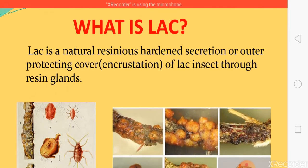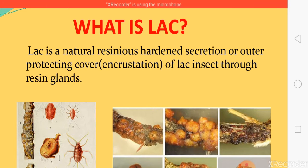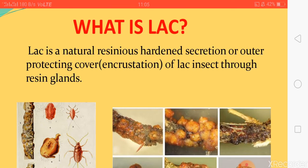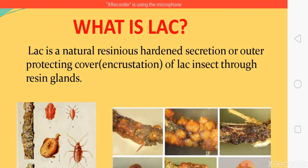Lac is the natural secretion of lac insects. The lac insects have resin glands all over the body except three main parts: mouthparts, breathing pores, and the anal region. Obviously, if they had resin glands everywhere, they could not respire, so those three areas are excluded. The resin glands are responsible for the secretion of this resinous hardened substance all over the body of the lac insect.